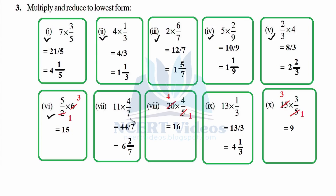Seventh: eleven times four is forty-four over seven. Seven sixes are forty-two and remainder is two — six and two over seven. Eighth: twenty times four over five — reduce: one five is five, four five is twenty, giving sixteen as a complete number. Ninth: thirteen is prime — thirteen over three; three fours are twelve, remainder one — four and one over three. Tenth: reduce first — answer is nine, a complete whole part.